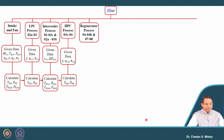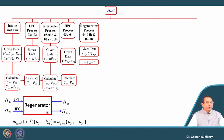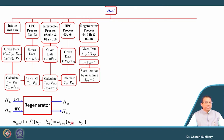Next we have the intercooler. We are given the effectiveness and pressure drop. We need to calculate the temperature at entry and exit of the intercooler, as well as the temperature at the exit of the intercooler for the bypass stream. Then for the HP compressor, efficiency and pressure ratio are given. From the HP compressor exit, air goes to the regenerator, for which effectiveness and pressure drop are given. To solve the cycle analysis we need to know the exit temperature from the LP turbine.